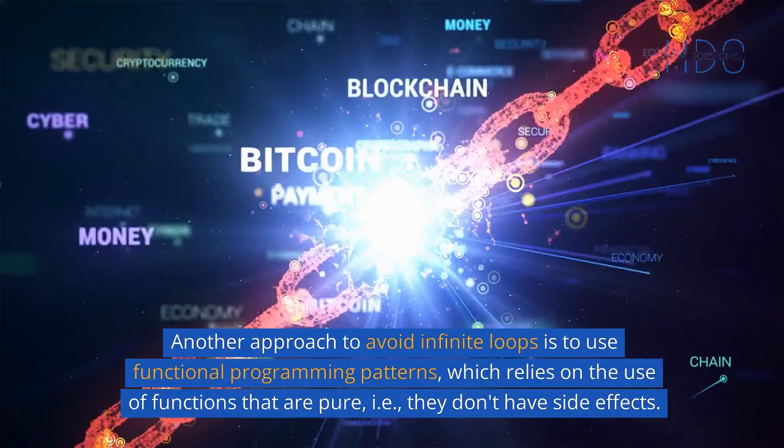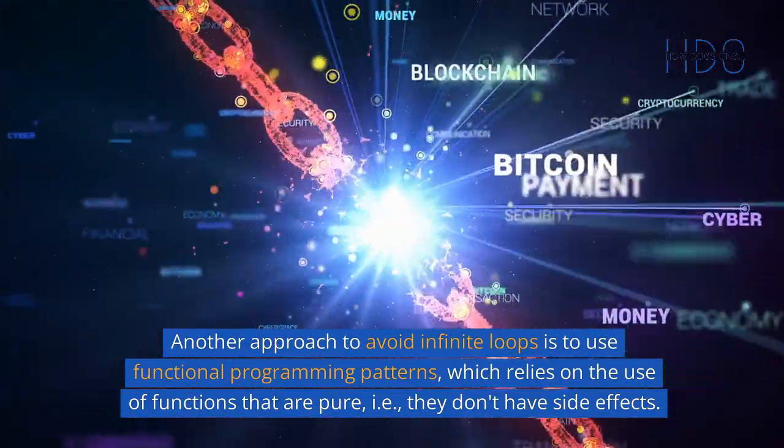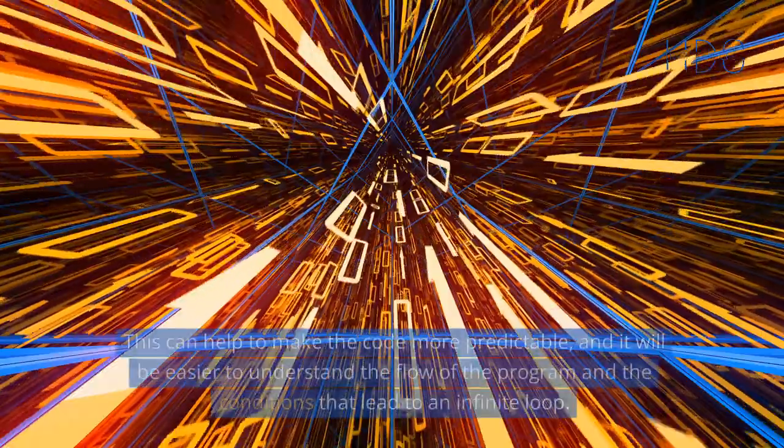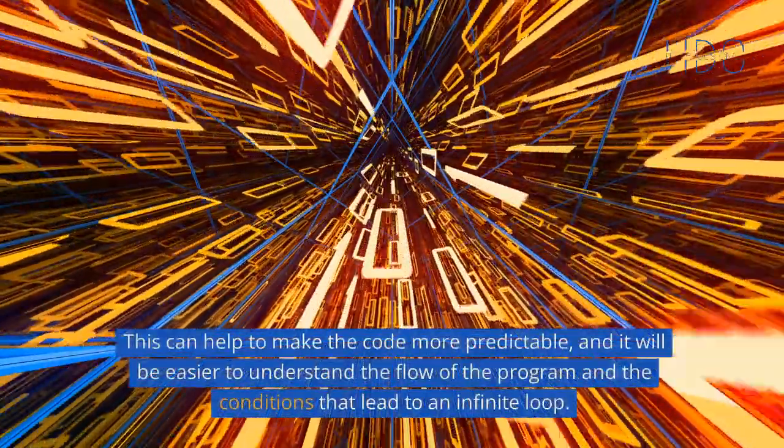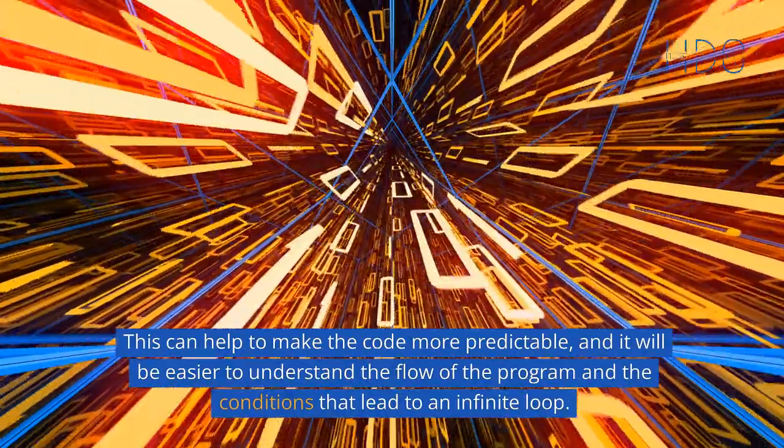Another approach to avoid infinite loops is to use functional programming patterns, which relies on the use of functions that are pure, i.e., they don't have side effects. This can help make the code more predictable, and it will be easier to understand the flow of the program and the conditions that lead to an infinite loop.